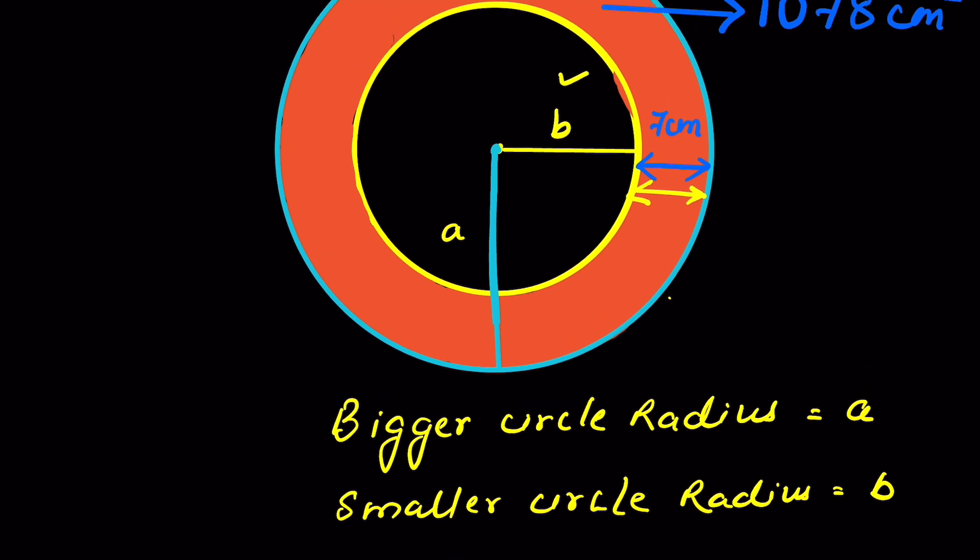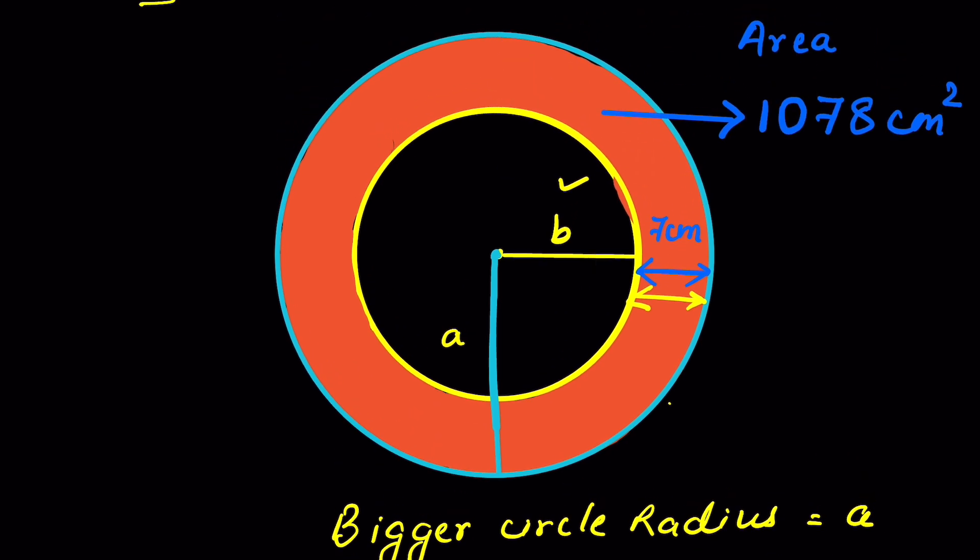Next it says the difference between their area. Now difference between that area is represented through this shaded region. This is equal to 1078 cm².